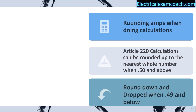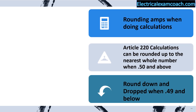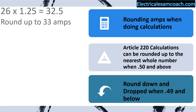In Article 220 calculations, we're going to be able to round up or down. We'll round up to the nearest whole number when it's 0.50 and above, and round down when it's 0.49 or below. We're only going to do this one time at the end of the calculation — not in between each piece, or you'll end up with the wrong answer.